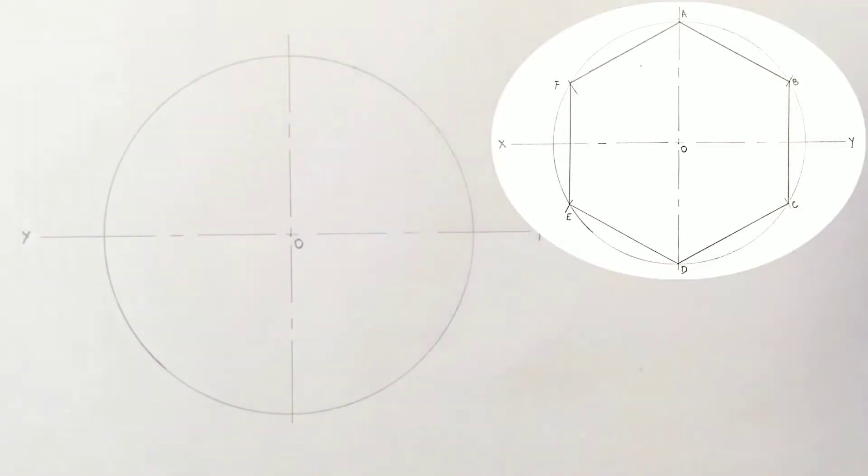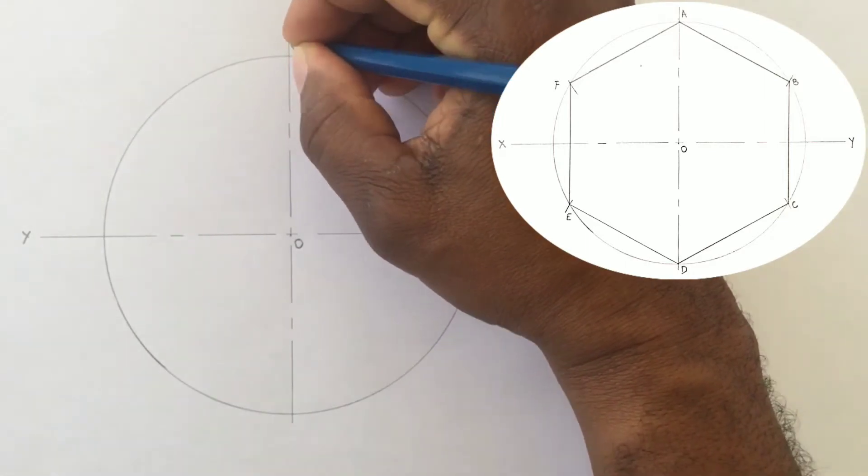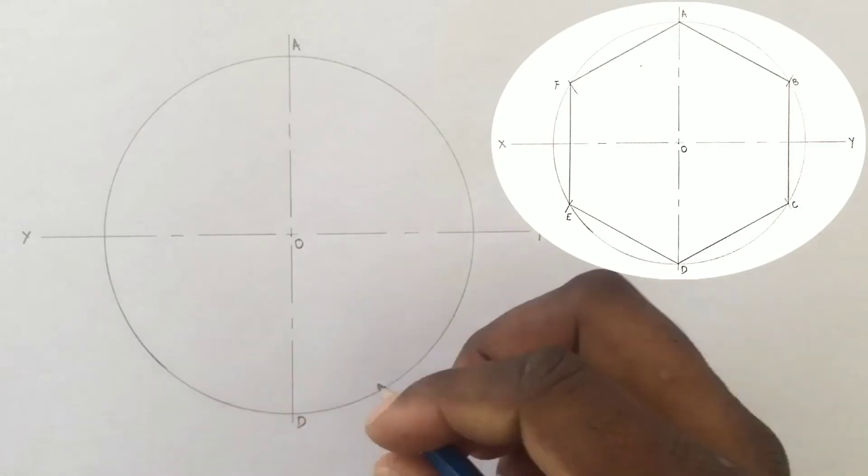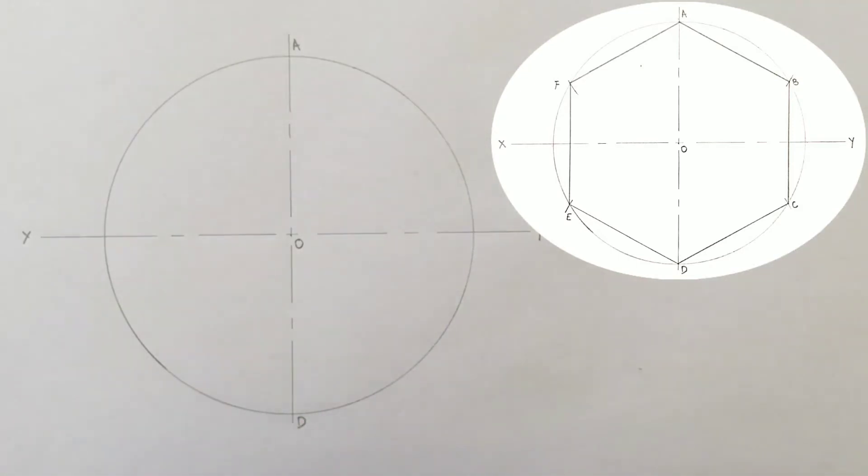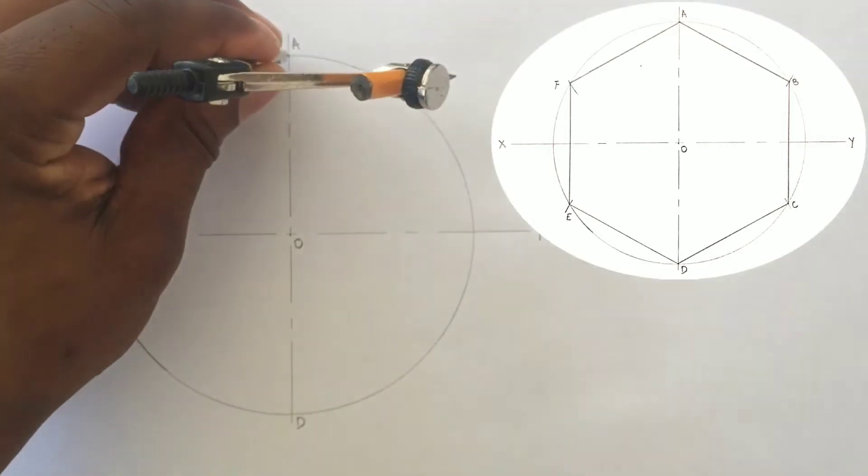We will label point A and point D. With our compass open to 60 millimeters which is the radius of the circle,